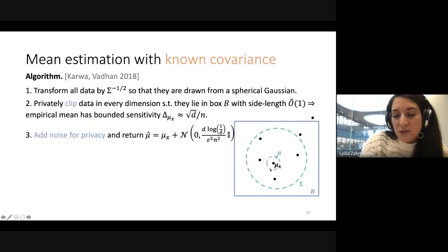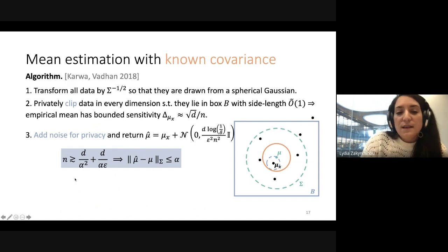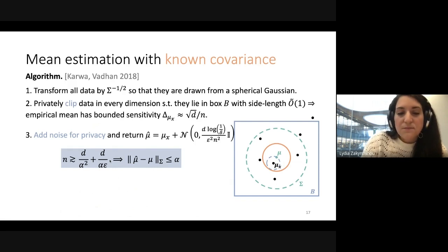Since we've bounded the sensitivity at sqrt(d)/n, we can use the standard Gaussian mechanism with noise magnitude proportional to this sensitivity. This yields really good sample complexity — the one we're aiming to achieve — except we don't know the covariance in our case.